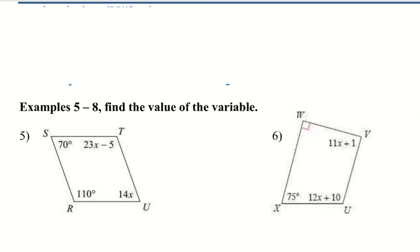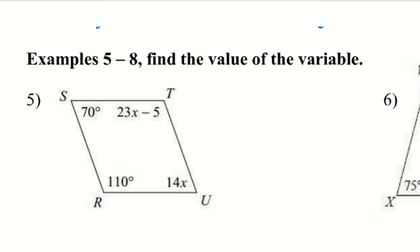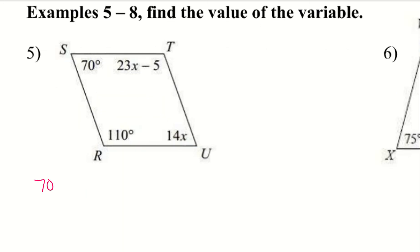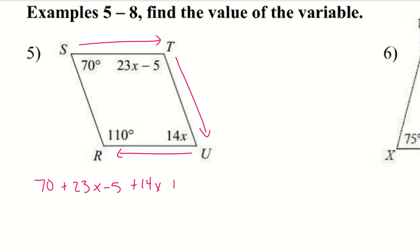The next couple of examples use the same exact process — adding each angle to get 360 — but this time we have a variable. Starting with 70, making my way around the shape: 70 plus 23x minus 5, plus 14x, plus 110 equals 360. Even with variables, I can still add them all up to get 360.